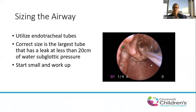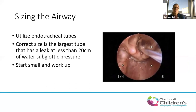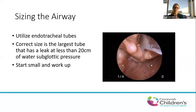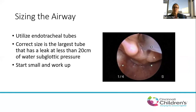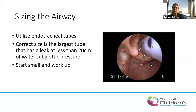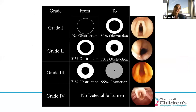One big component of evaluation is sizing the airway to determine the grade of stenosis. We utilize endotracheal tubes — the correct size is the tube that has a leak at less than 20 centimeters of water pressure in the subglottis. We typically start with a small tube and work up until we have one that no longer has a leak, and from that sizing determine the grade.